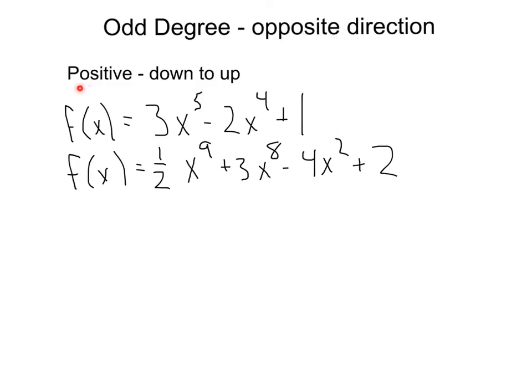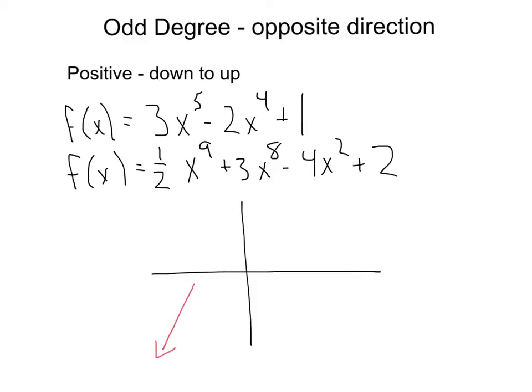Here we have the case where we've got an odd degree. When we've got an odd degree, instead of going the same direction, we're going to have the opposite direction. When it's a positive leading term with an odd degree, the left is going to be going down towards negative infinity and the right is going to be going upward to infinity — we go down to up. Here we have 3X to the fifth — positive leading term with an odd degree. Here we have 1 half X to the ninth — again, a positive leading term with an odd degree. So we're going to be starting from the downward direction on the left, towards negative infinity, and going up to positive infinity on the right.